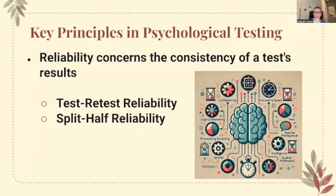More key principles of psychological testing. Reliability concerns the consistency of a test's results. Test-retest reliability means if the test is taken more than once, do the results stay the same? This helps ensure test results are reproducible. With the SAT, kids who take it multiple times might go up maybe 100 to 150 points — that's generally how it goes. Split-half reliability measures the internal consistency of the test: if you split the test in half, do both halves produce similar results?